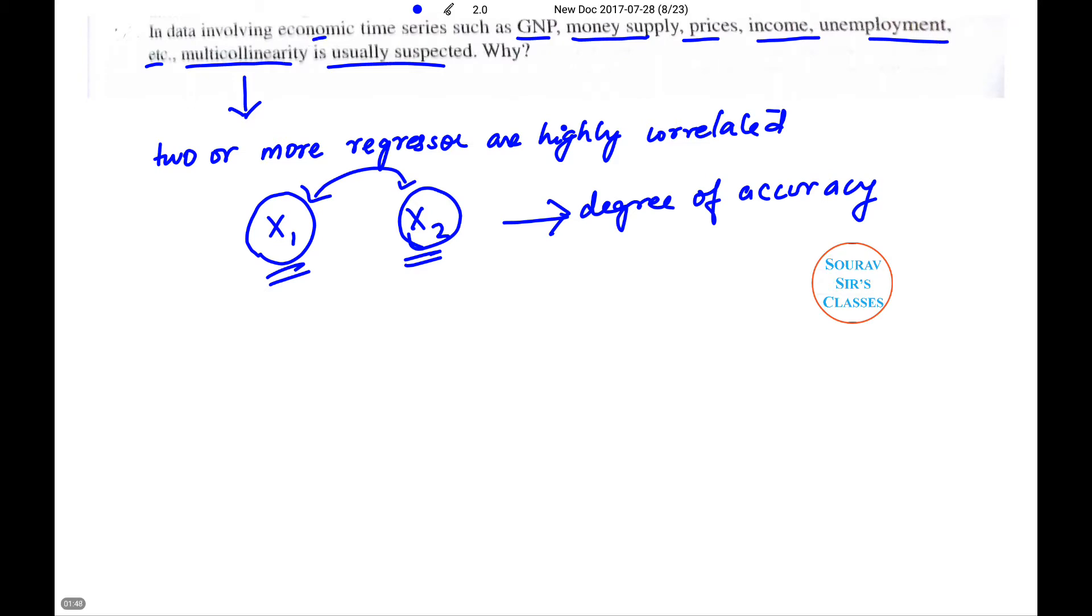Now we have been given economic time series such as GNP, money supply, prices, income, unemployment etc. And they are asking us whether there will be a multicollinearity problem in this case, and if there is, then why.